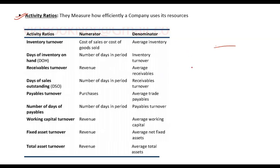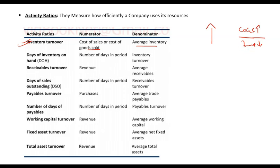Activity ratios tell you about the overall efficiency of the company — how efficiently revenue is generated, how efficiently stock is managed, or how efficiently receivables and cash are managed. A key ratio is inventory turnover, which is cost of goods sold divided by average inventory. If this ratio is higher, that means COGS is going up and inventory is going down. If your inventory levels are less but sales are the same, that is good — you are able to sell more with lower inventory, and inventory management costs are lower.